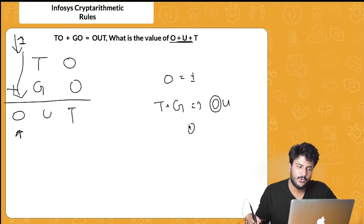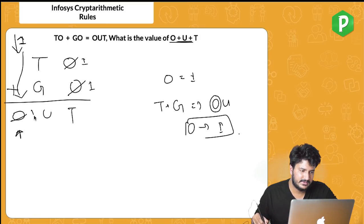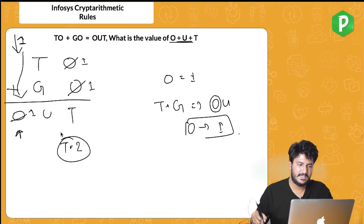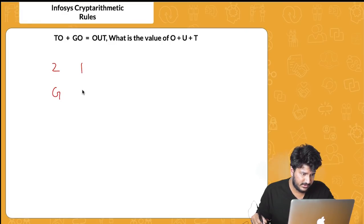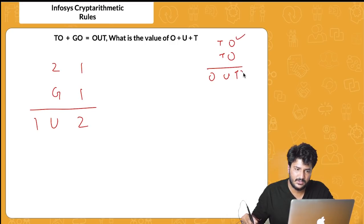We replace O with 1 throughout. Now in the hundreds column, 1 carry comes in and 1 (O) is already there, so 1 plus 1 equals T, meaning T equals 2. Let me rewrite the updated problem: we have T=2, O=1, and G and U are still unknown. The equation now reads: 21 + G1 = 1U2.